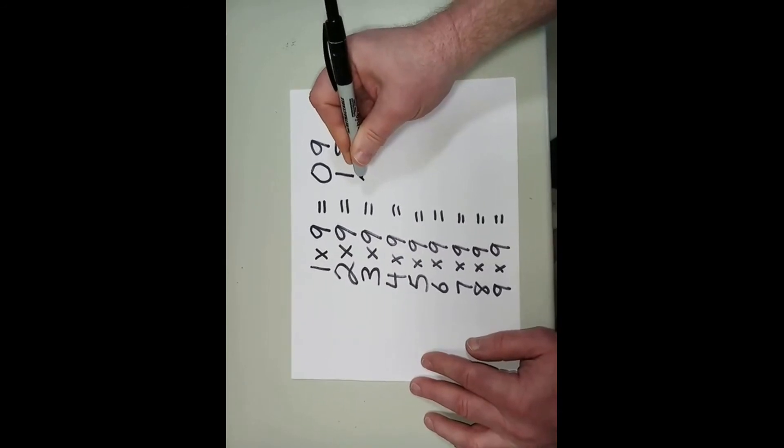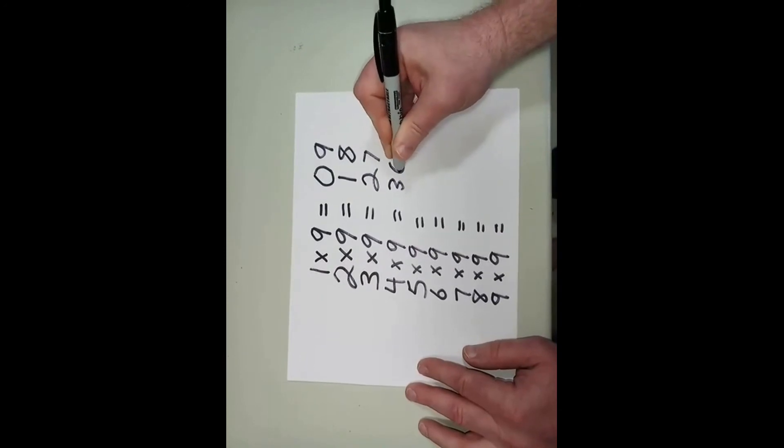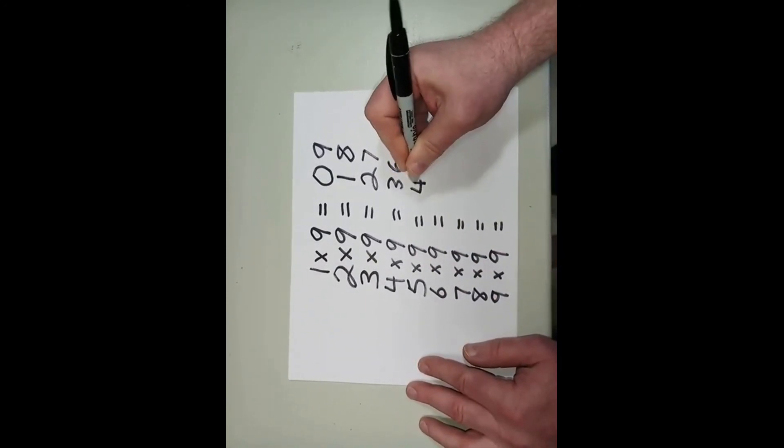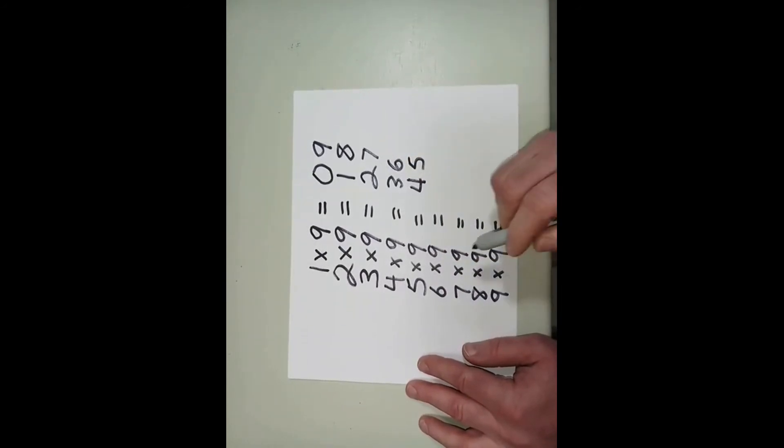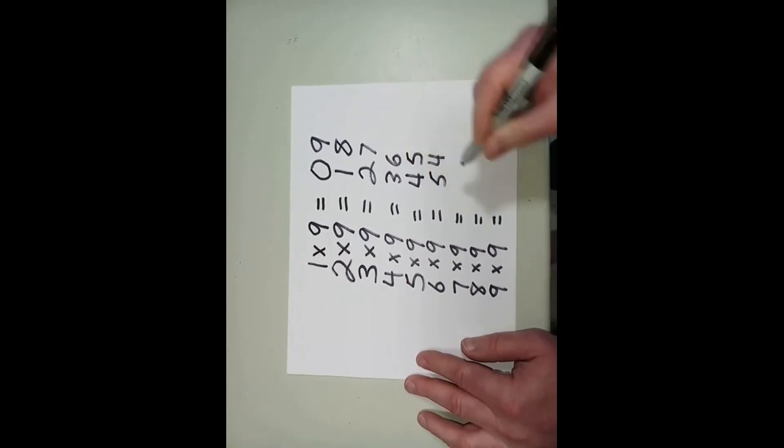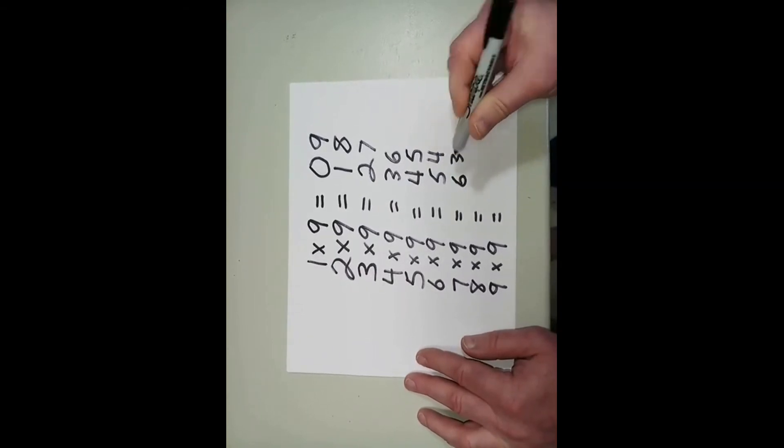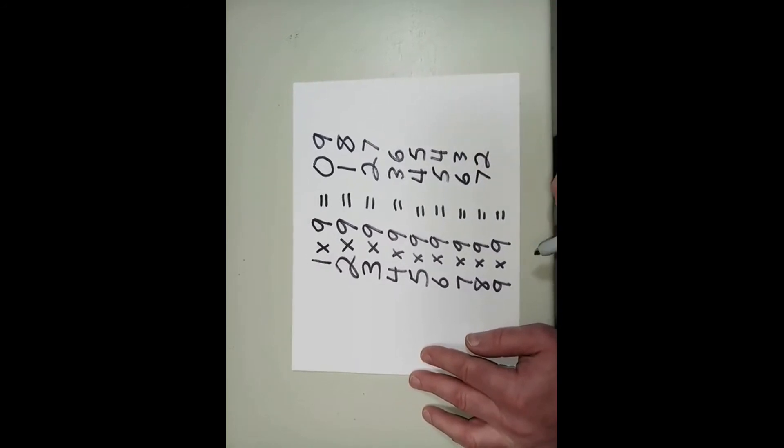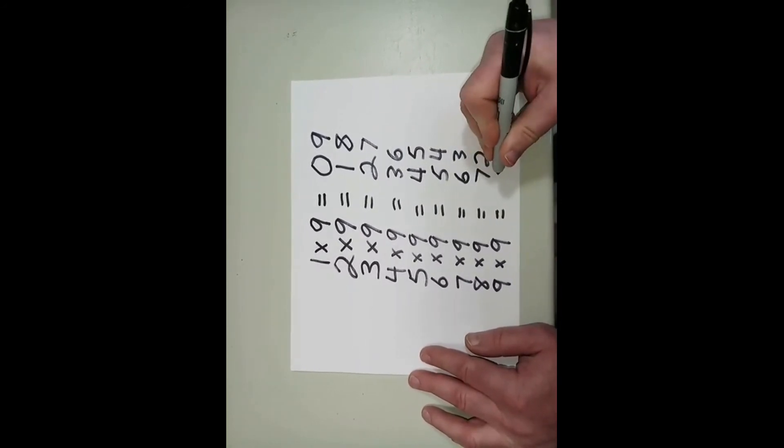3 times 9 is 27. 4 times 9 is 36. 5 times 9 is 45. 6 times 9 is 54. 7 times 9 is 63. 8 times 9 is 72. And finally 9 times 9 is 81.